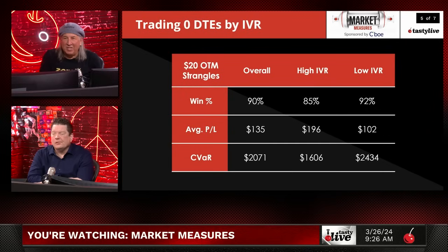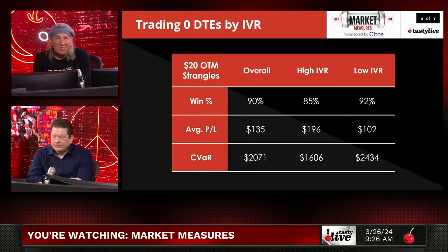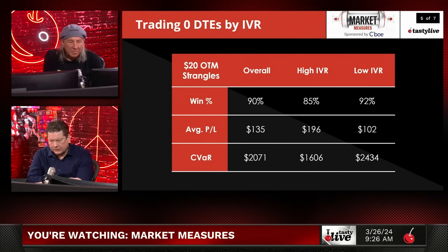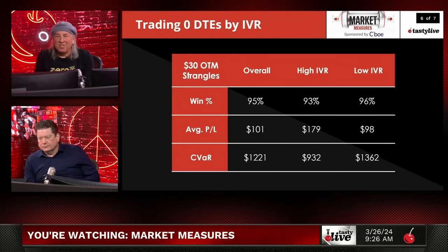With the 20-delta wide strangles — the ones I usually trade — it actually started to make a difference. You made more money with the high IVR in the 20-wide strangles. That's where I usually live; whether you buy the wings or not, it tends to work best. So here, high IVR produces significantly better results. Moving to 30-delta wide out of the money: exactly the same pattern as the 20-wide. Higher win percentage, less risk, high IVR outperforms.